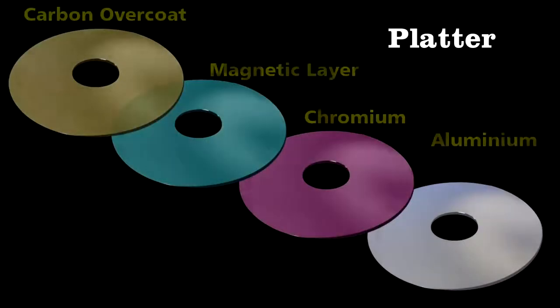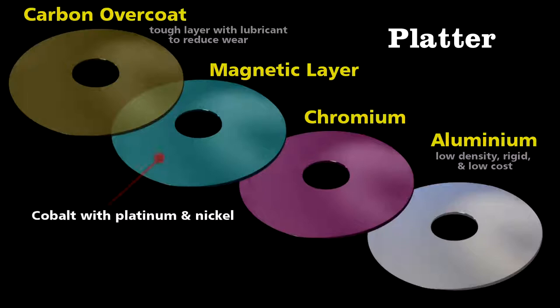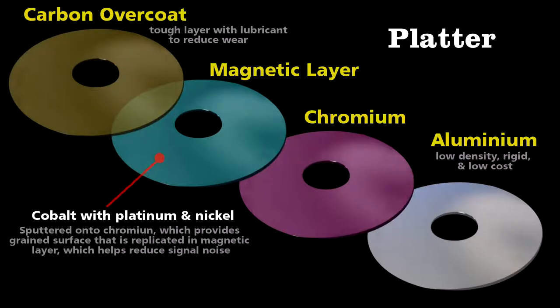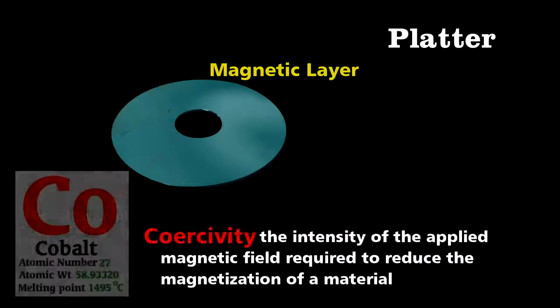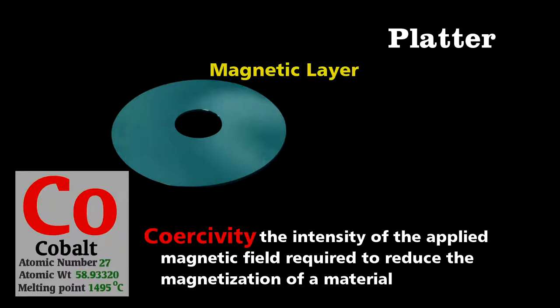The key element of the platter is the magnetic layer, which is cobalt with perhaps platinum and nickel mixed in. Now, this mixture of metals has high coercivity, which means that it will maintain that magnetization, and thus data, until it's exposed to another powerful magnetic field.